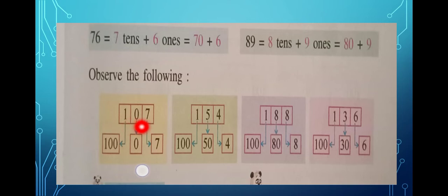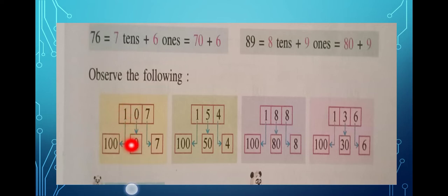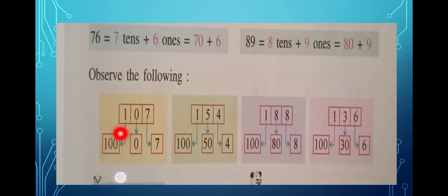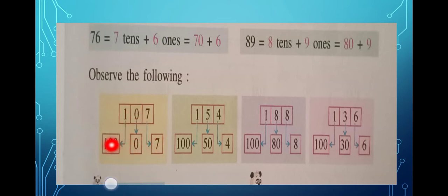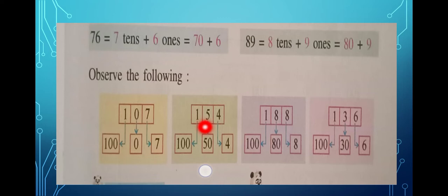Now observe this example: 107. Seven is in the ones place, so seven. Zero is in the tens place, but you should know that the place value of zero is always zero — you don't need to write any extra zeros. So 107 is written as 100 plus 0 plus 7.